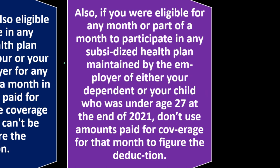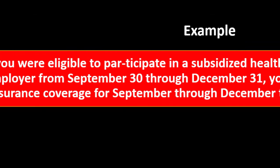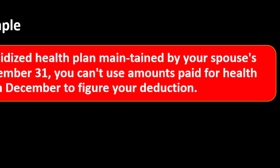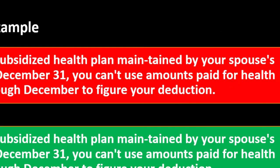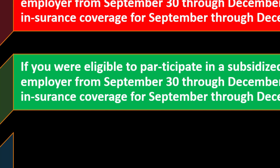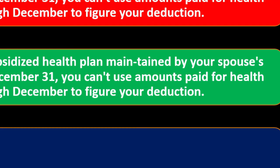Also, if you were eligible for any month or part of a month to participate in any subsidized health plan maintained by the employer of either your dependent or your child who was under age 27 at the end of 2021, don't use amounts paid for coverage for that month to figure the deduction. A QSEHRA is considered a subsidized health plan maintained by an employer. For example, if you were eligible to participate in a subsidized plan maintained by your spouse's employer from September 30th through December 31st, you can't use amounts paid for September through December to figure your deduction.